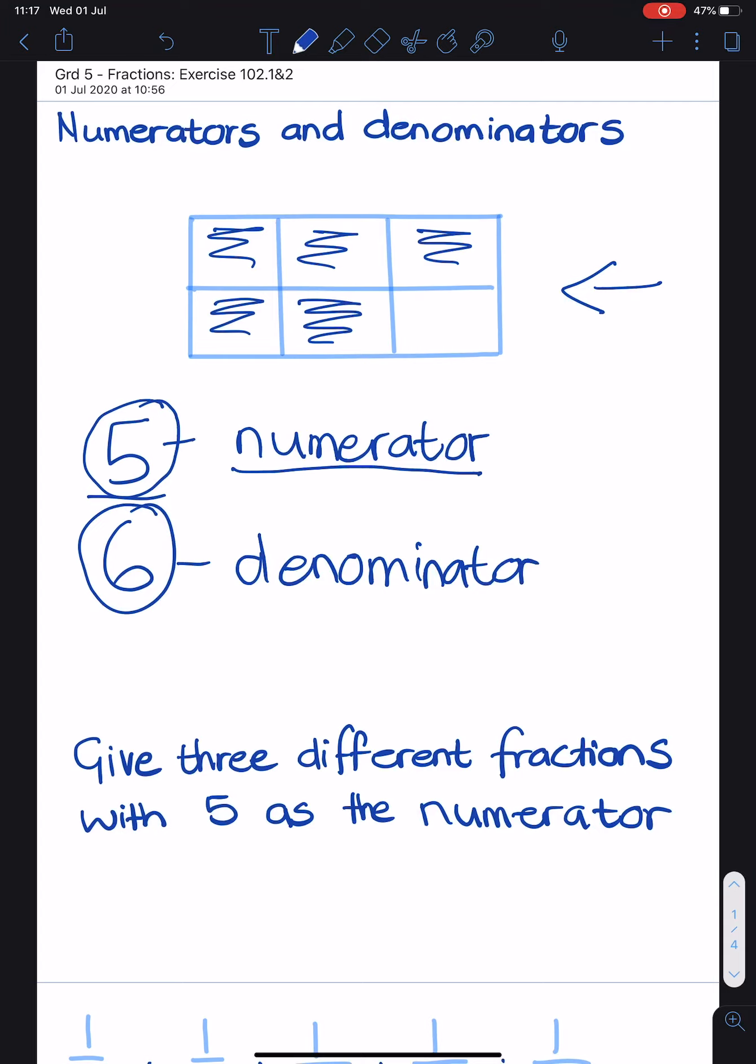Let's answer the question underneath that. It says, give 3 different fractions with 5 as the numerator. So 5 as the numerator means that 5 needs to be at the top. And they are asking me for 3 different fractions with 5 as the numerator. So I can put any numbers that I like at the bottom. And there I have given you 3 different fractions with 5 as the numerator.